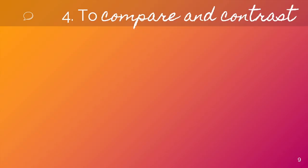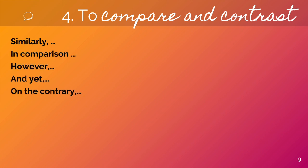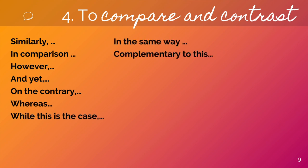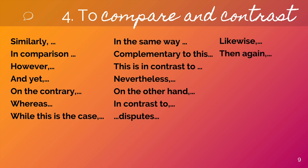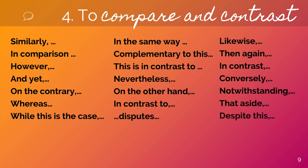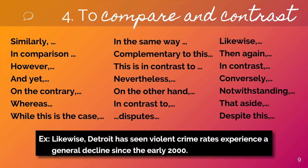Group number four: to compare and contrast. We can use: similarly, in comparison, however, and yet, on the contrary, whereas, while this is the case, in the same way, complementary to this, this is in contrast to, nevertheless, on the other hand, in contrast, likewise, then again, conversely, notwithstanding, that aside, despite this. My example is: 'Likewise, Detroit has seen violent crime rates experience a general decline since the early 2000s.'